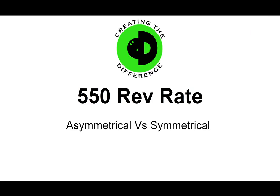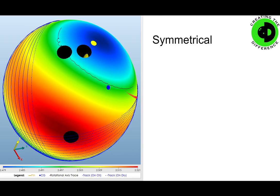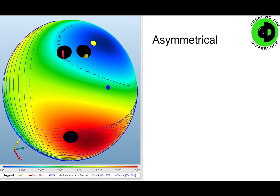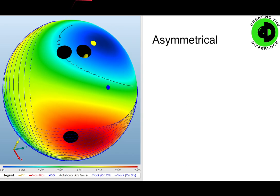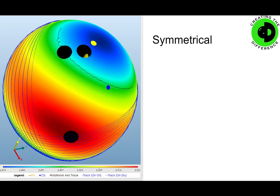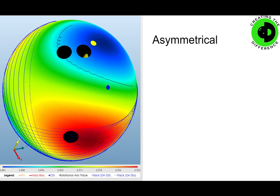What happens when everything's the same but the rev rate's higher — going from 350 to 550? With the symmetrical layout you're going to see more axis migration. In the asymmetrical, you can see it really comes around — big difference, big issue. When you get to 550, higher rev rate, two-finger, no-thumb players, they don't tend to like asymmetrical balls because of all that curvature. All of this curvature is creating earlier transition and earlier hook, and that type of player already has enough revs to create all the hook they could want. That's why you see a lot of the high rev rate pros go more toward symmetrical layouts than asymmetrical.